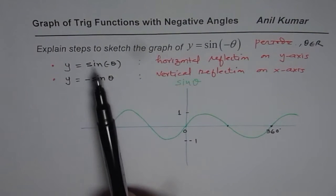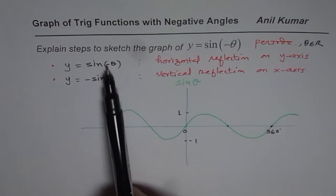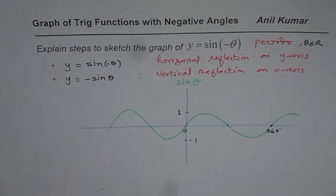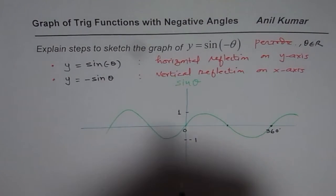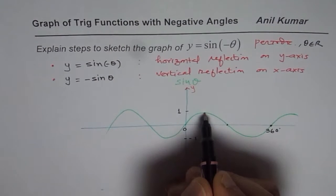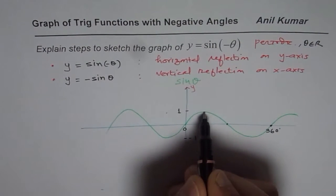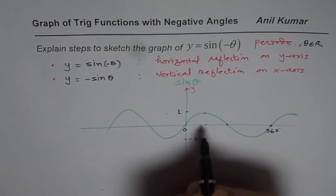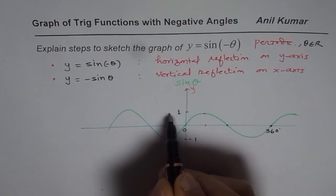Now, if I adopt the first approach, that is reflection on y-axis, sine of minus theta, then it means what? It really means that all these points will be reflected on the y-axis like this. So we'll get a mirror image. So this point, which is maximum here, will not appear at 90 degrees, but will appear at minus 90. Do you see that?